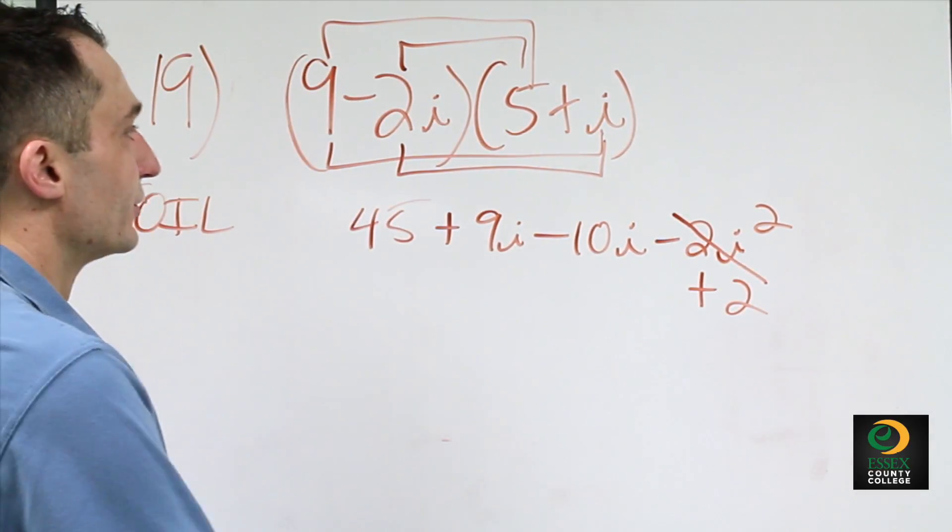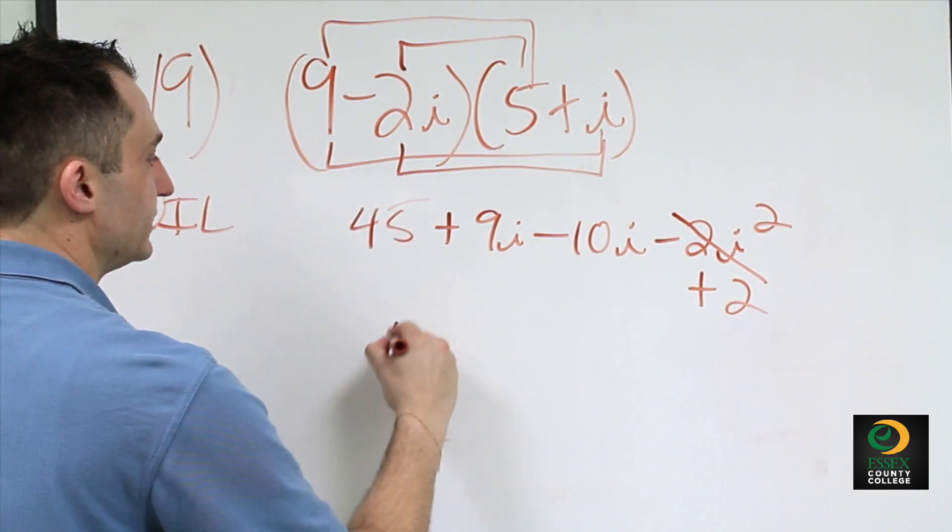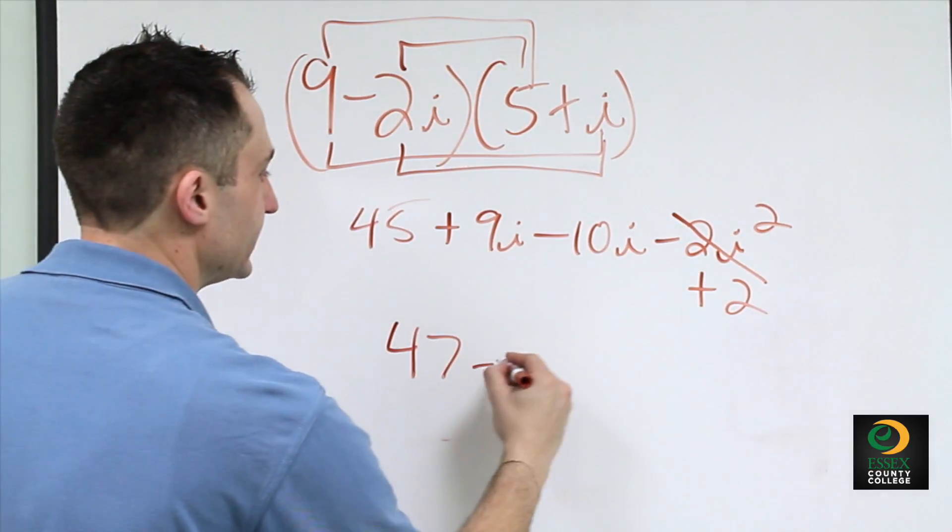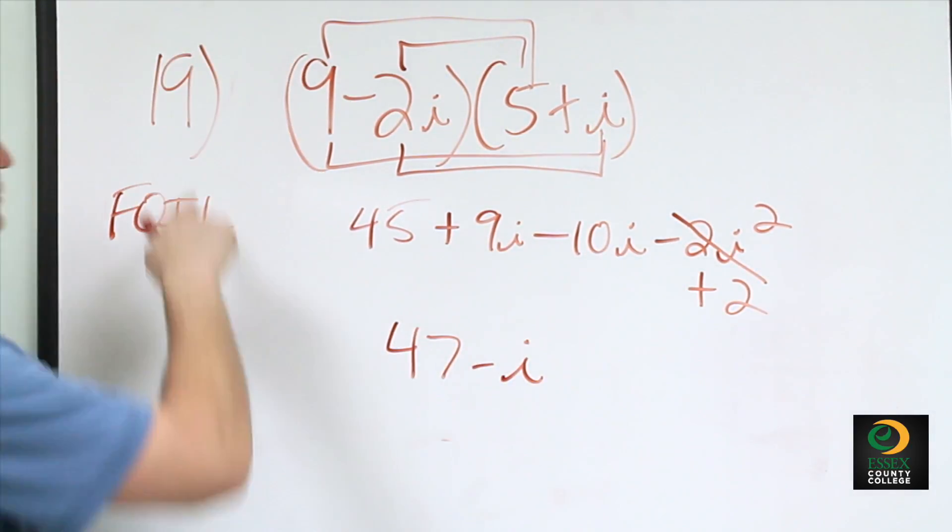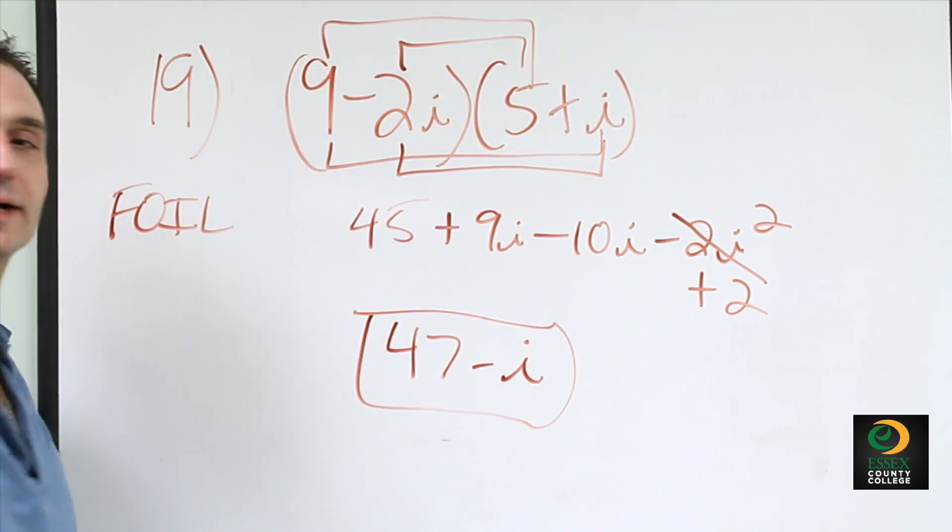Now we combine like terms. 45 plus 2 becomes 47, and 9i minus 10i becomes negative i. Your final answer for number 19 is 47 minus i.